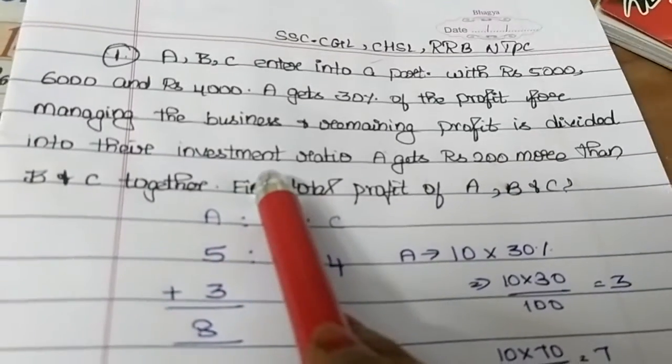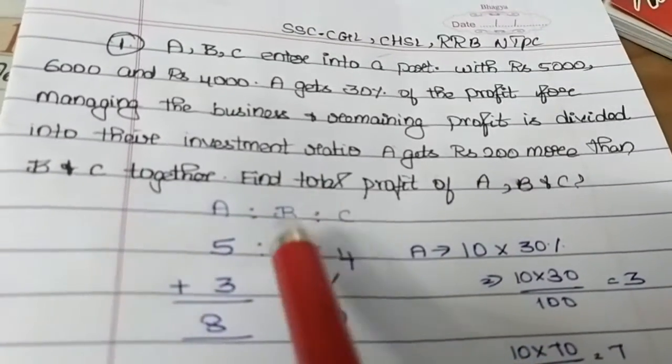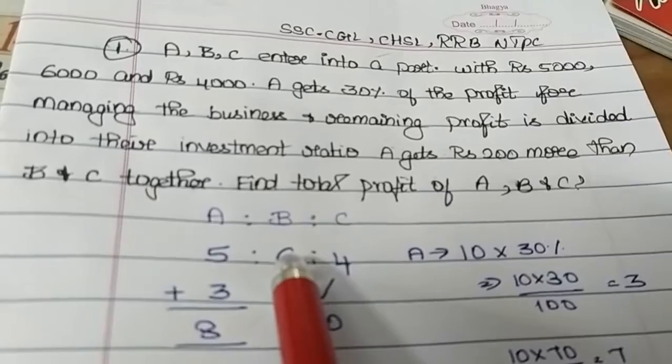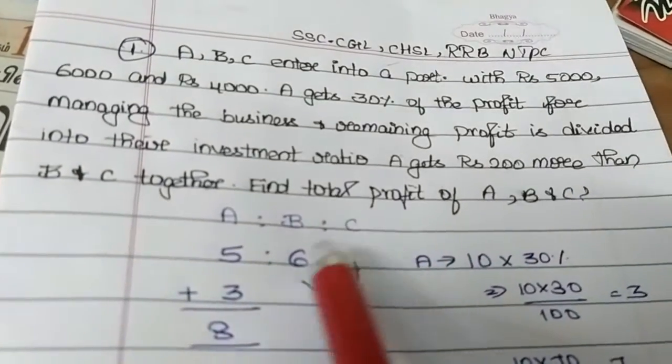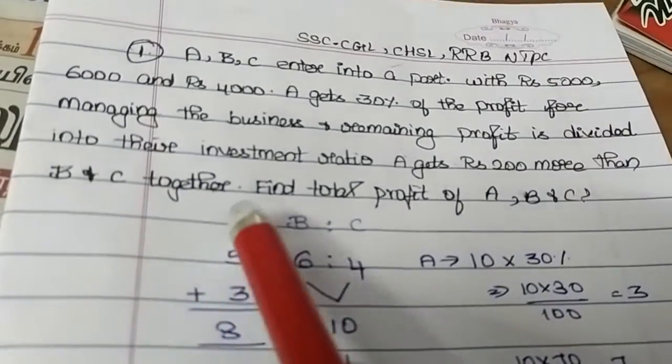Remaining profit is divided into their investment ratio. A gets 200 more than B and C.